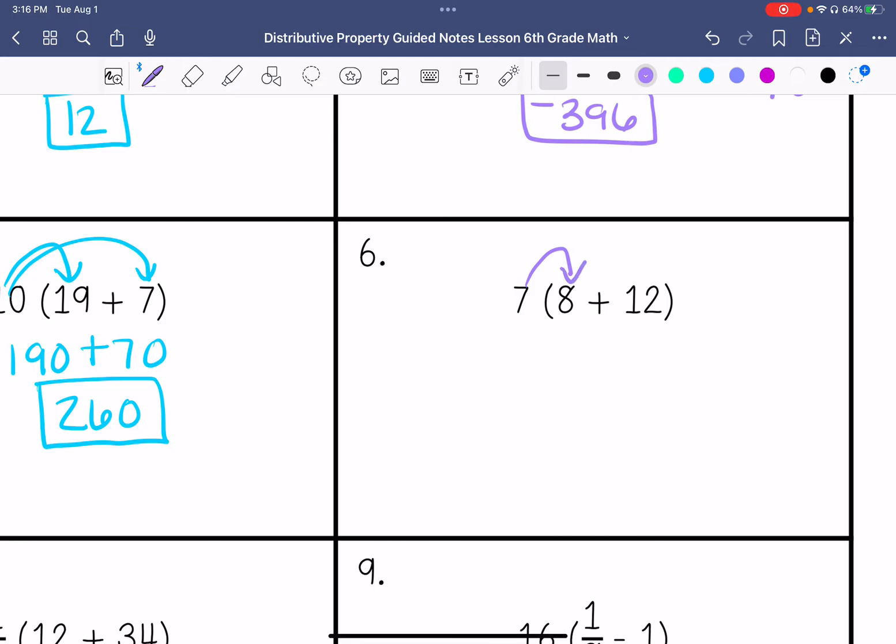7 times 8 is 56, 7 times 12 is 84, and we're going to add these two. Sorry, I added the wrong number. 140.